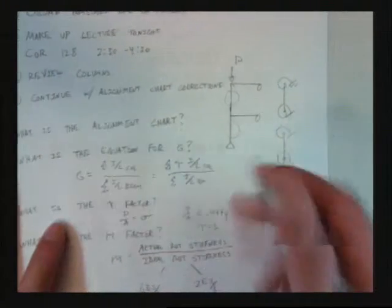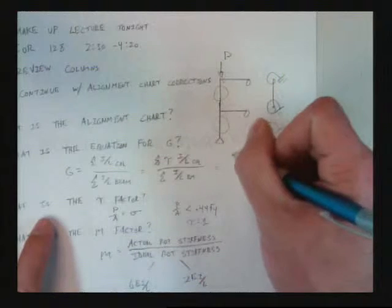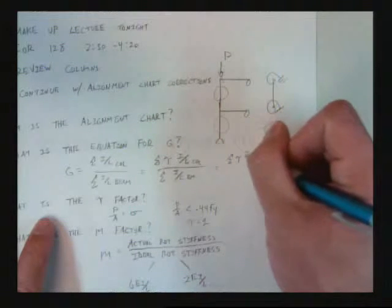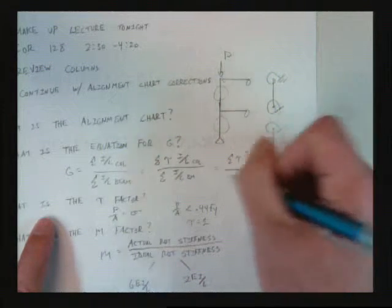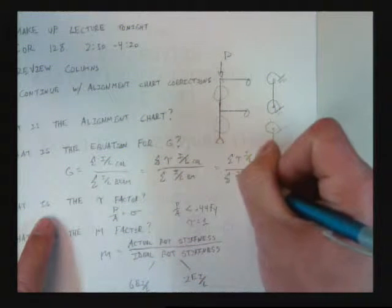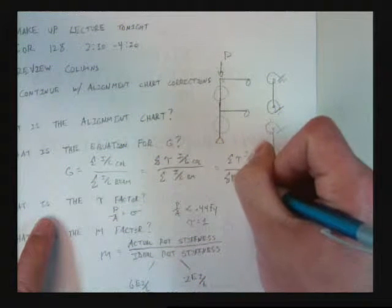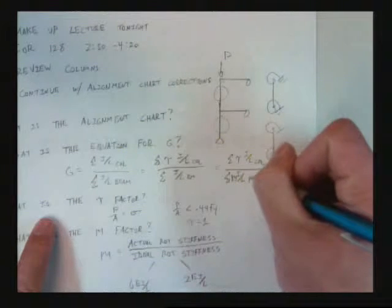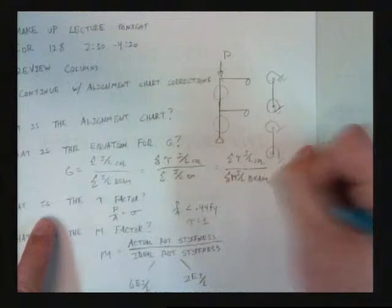On the bottom. Summation of tau, I over L of the column, all over summation, I of M, I over L of the beam. You with me? Okay. So, we'd seen that.